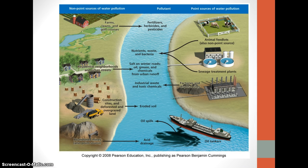The graphic depicts typical sources of non-point source pollution on the left, such as farms, urban neighborhoods, construction sites, and abandoned mines, and point sources of pollution on the right, such as animal feedlots, sewage treatment plant discharges, factories, and an oil spill from a tanker.